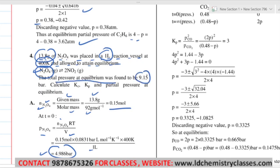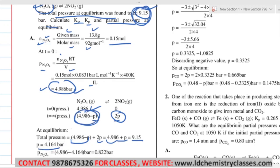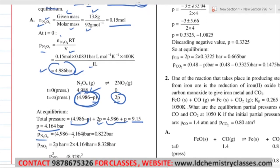Total pressure at equilibrium is given in the question. At equilibrium, total pressure equals (initial pressure minus P) plus 2P for N₂O₄ and NO₂ respectively. From the given total pressure value (9.15 bar), solve for P. Then partial pressure of N₂O₄ = 4.986 minus P, and partial pressure of NO₂ = 2P. Both values are obtained. KP and KC values need to be found.